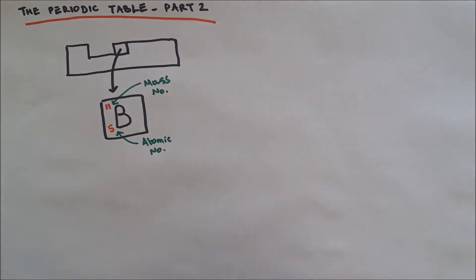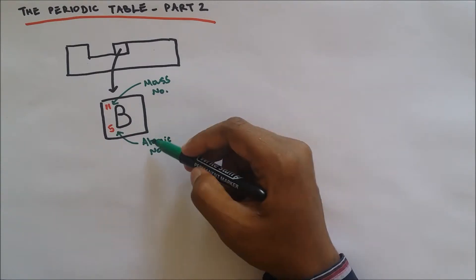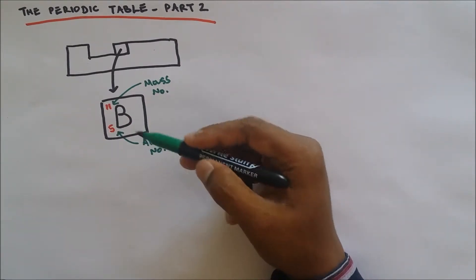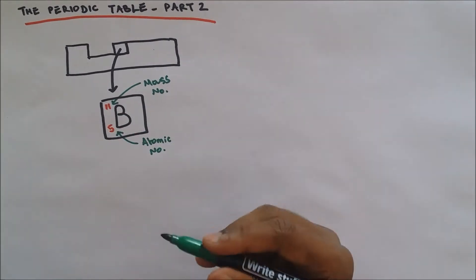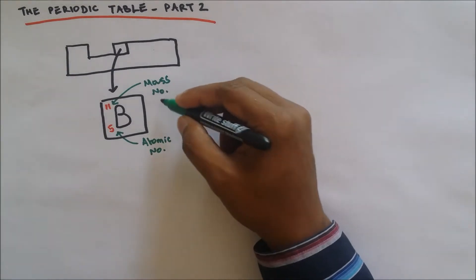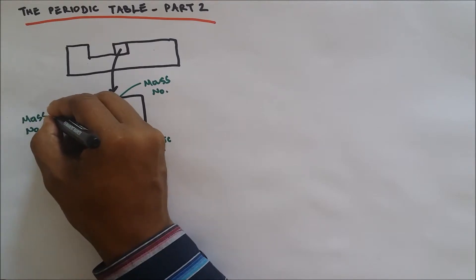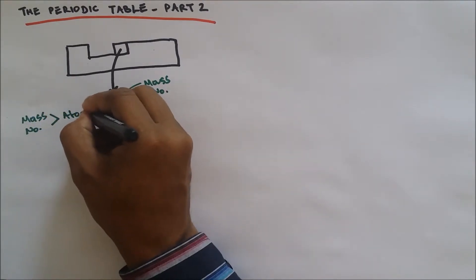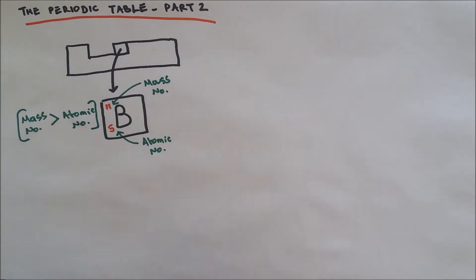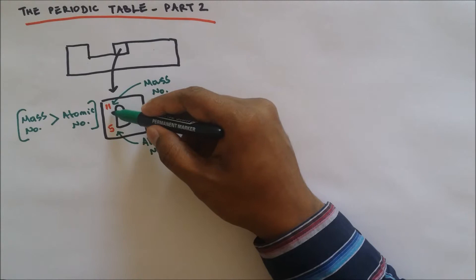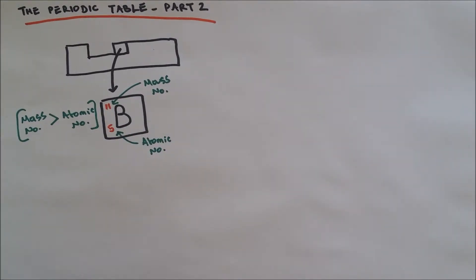It is wrong to say top number and bottom number. The actual term to use is: the bigger number is the mass number and the smaller number is the atomic number. Because in some periodic tables, 5 could be at the top and 11 at the bottom. So what you have to remember is that the mass number is always greater than the atomic number.